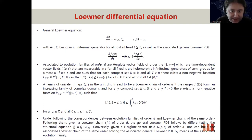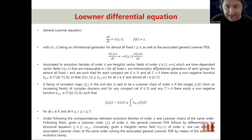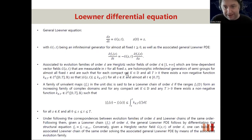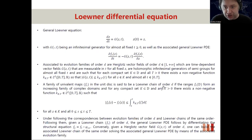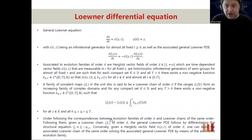Associated with these equations are the Herglotz vector fields — t-dependent vector fields that are measurable in t for all fixed z and are holomorphic infinitesimal generators of semi-groups for almost all fixed t, such that for each compact set there exists a non-negative function satisfying certain properties. A family of univalent maps can be related to Loewner chains of order d, and these Loewner chains characterize and derive solutions related to Herglotz vector fields and the general solutions.